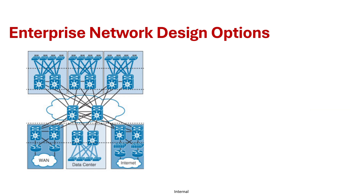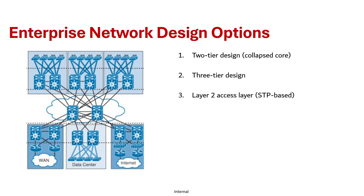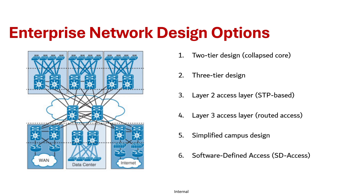Based on these factors there are six design options mentioned by Cisco: starting with two-tier design also known as collapsed core, three-tier design, layer 2 access designs based on STP, layer 3 access design based on routed access, simplified campus design based on virtual switching, and last but not least software-defined access also known as SD-Access. Let's break down these design options one by one.